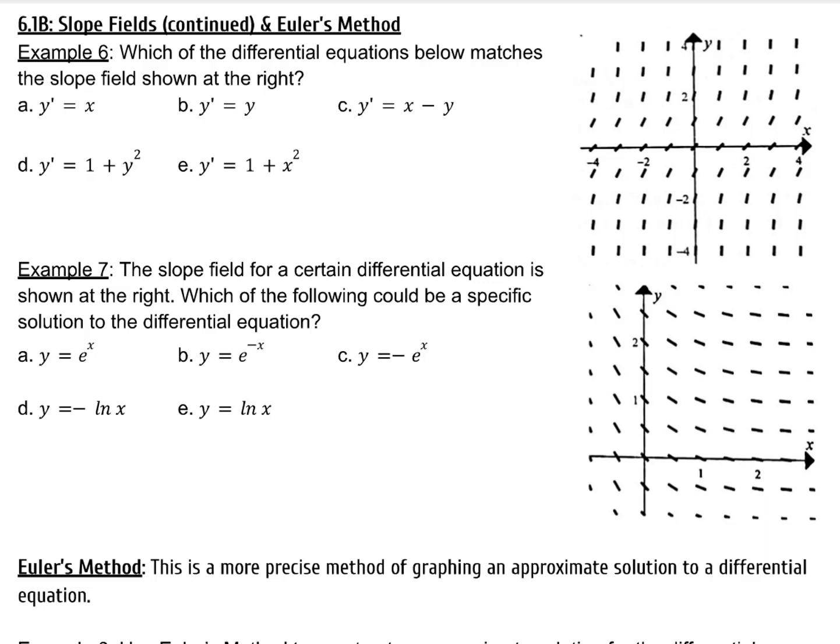The first thing that I notice is that all the slopes for this graph are positive. So A is not an option, B is not an option, and C is not an option, because they will give you sometimes negative values.